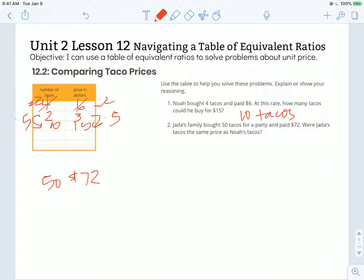I want to know how much Noah paid for 50 tacos. Right now I know that 10 tacos cost $15, so I'm going to take that value and multiply it by 5 to get 50 tacos, which means I'm going to take 15 and multiply it by 5. 10 times 5 is 50 and 5 times 5 is $25. So his 50 tacos at the rate that he paid would cost $75.